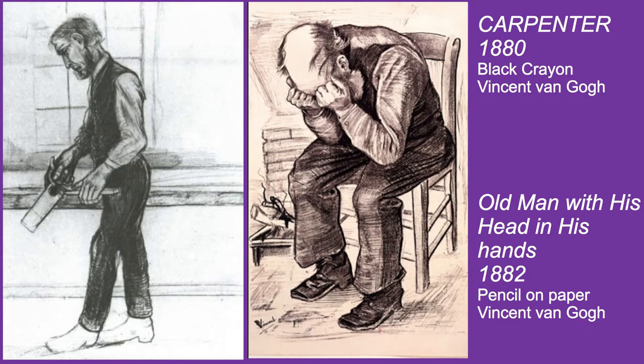An example of showing progress is these drawings side by side by Vincent van Gogh. The drawing on the left is not as good as the one on the right — the proportion is a little off, the head and hands are slightly too big. But after two years of practice, van Gogh got really good at drawing, as shown in his drawing on the right, 'The Old Man with His Head in His Hands.' It is a very well-composed and captivating drawing, very different from where he started.